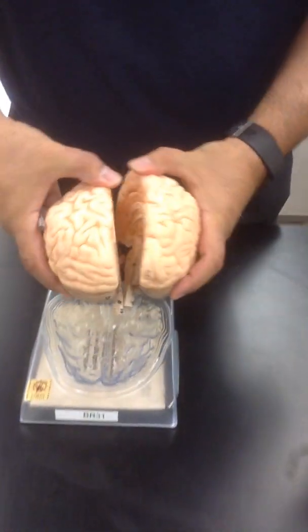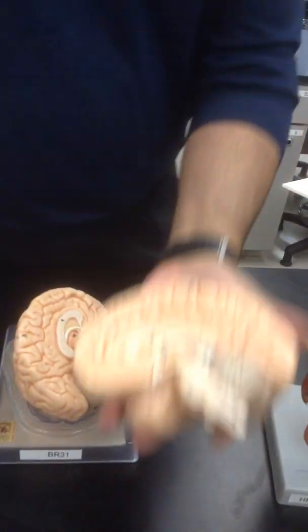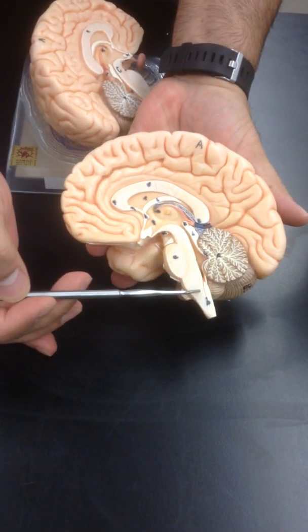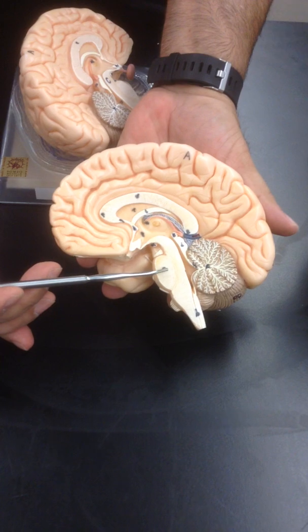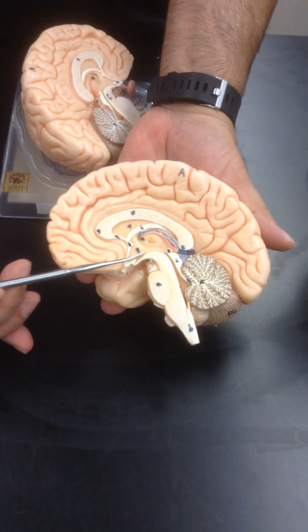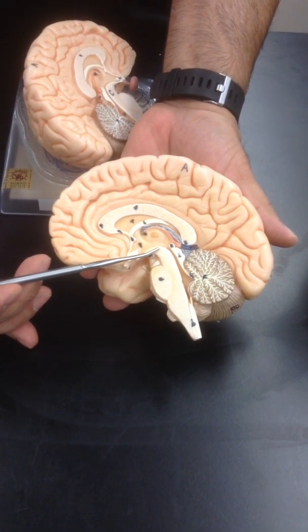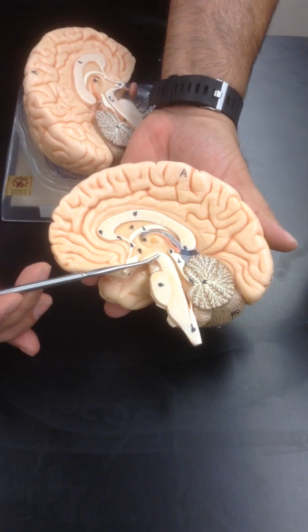Looking at this one here, if I separate it, it might be a little bit easier for you to visualize. So, this is the medulla oblongata. Then you have the pons, and of course, the midbrain. Usually, the midbrain is also called mesencephala.